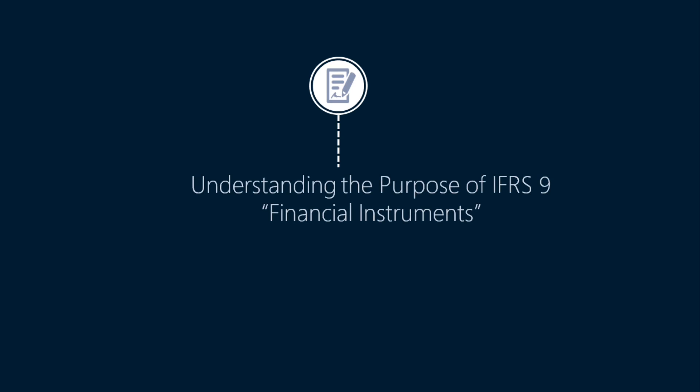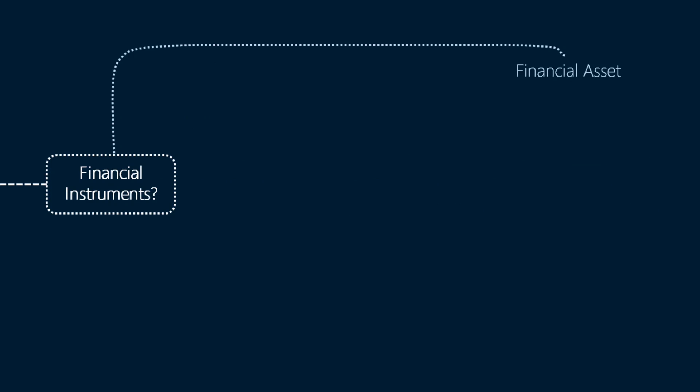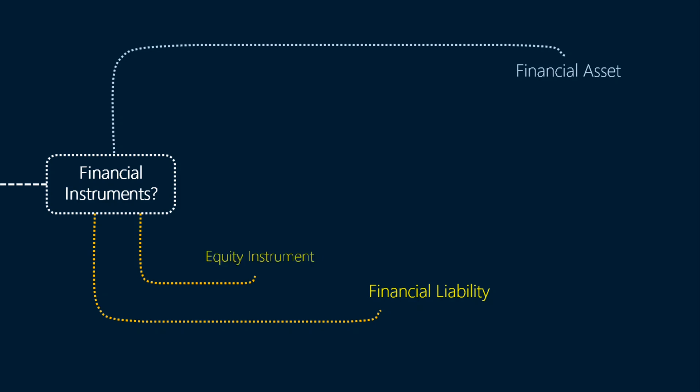In this video we will understand the purpose of IFRS 9 and some key concepts necessary to get started. IFRS 9 provides guidance for accounting of financial instruments, so to understand what it's all about we should probably know what a financial instrument is. A financial instrument is a contract which gives rise to a financial asset of one entity and a financial liability or equity instrument of another entity.